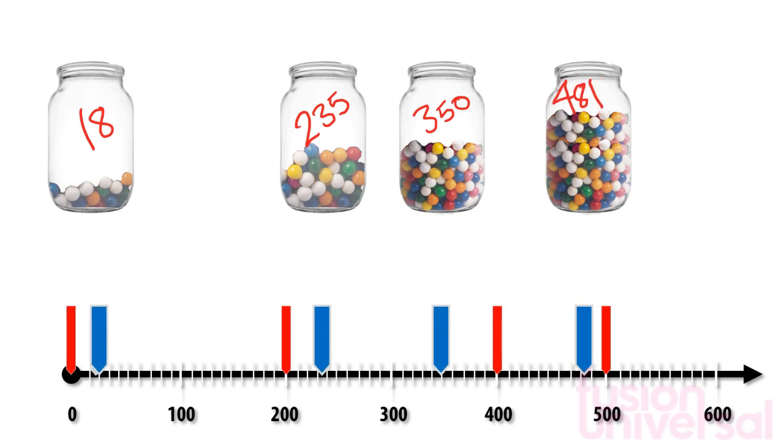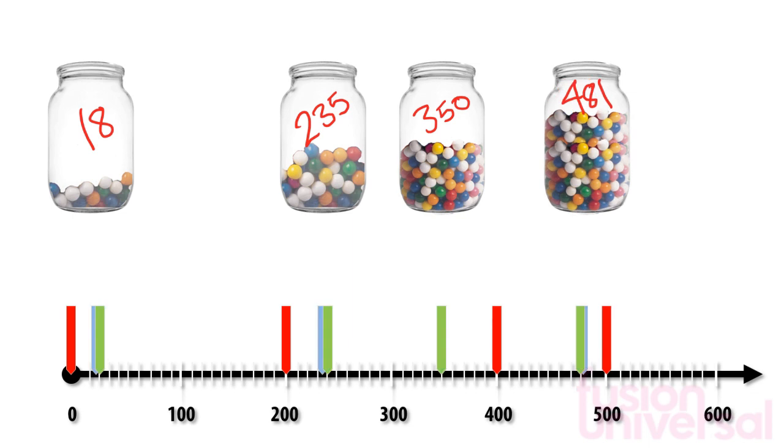Sometimes you might round up to the nearest 100 but round down to the nearest 10, or the other way around.